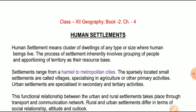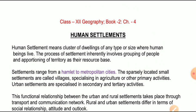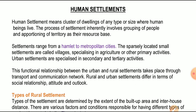Hi, I am Rekha Mishra presenting class 12th Geography Book 2, Chapter 4 - Human Settlements. Human settlement means a cluster of dwellings of any type or size where human beings live. The process of settlement involves grouping of people and appropriating territory as their resource base. We will study India People chapter on human settlements - मानव बस्तियां. मानव बस्तियों का मतलब होता है वो छोटे-छोटे रहवास जो मनुष्य अपने रहने के लिए चुनता है, और एक निश्चित स्थान पर विभिन्न आकार-प्रकार के घरों में रहता है।